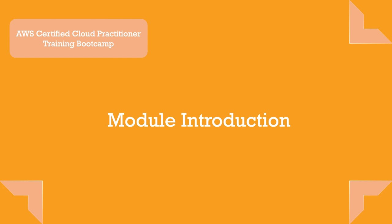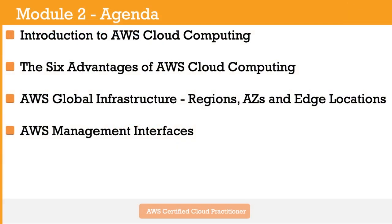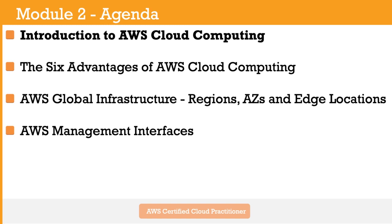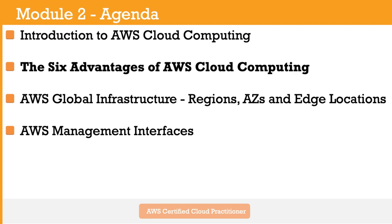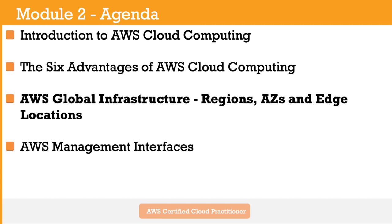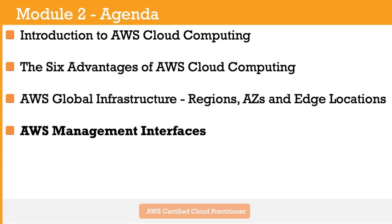Welcome to Module 2: Introduction to AWS Cloud Computing. This module provides an introduction to AWS cloud computing. We will start by discussing what cloud computing is, then cover current cloud computing models and deployment models. Working in AWS brings great value to any business, from startups to large enterprises. We'll discuss the six advantages of running applications in AWS cloud and conclude with AWS global infrastructure, availability zones, regions, and edge locations.